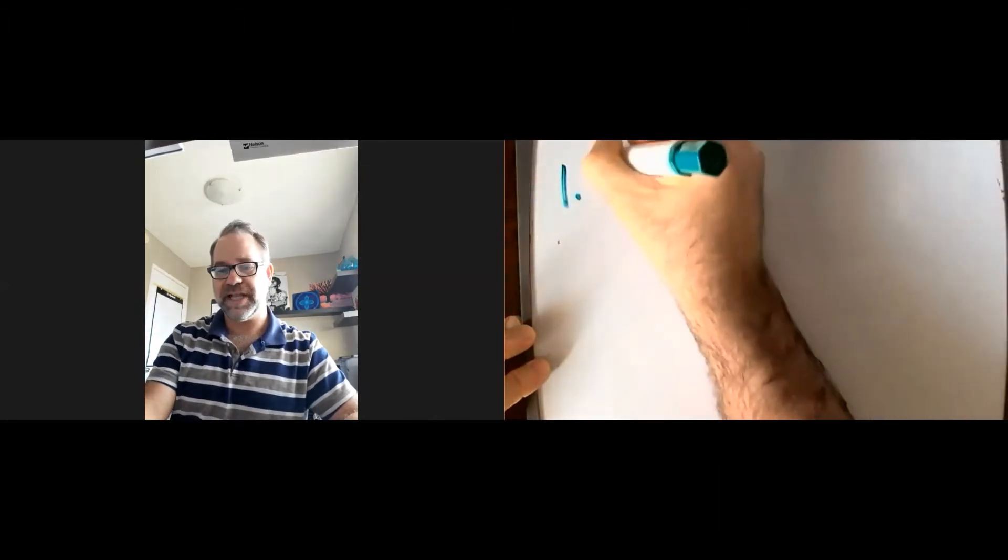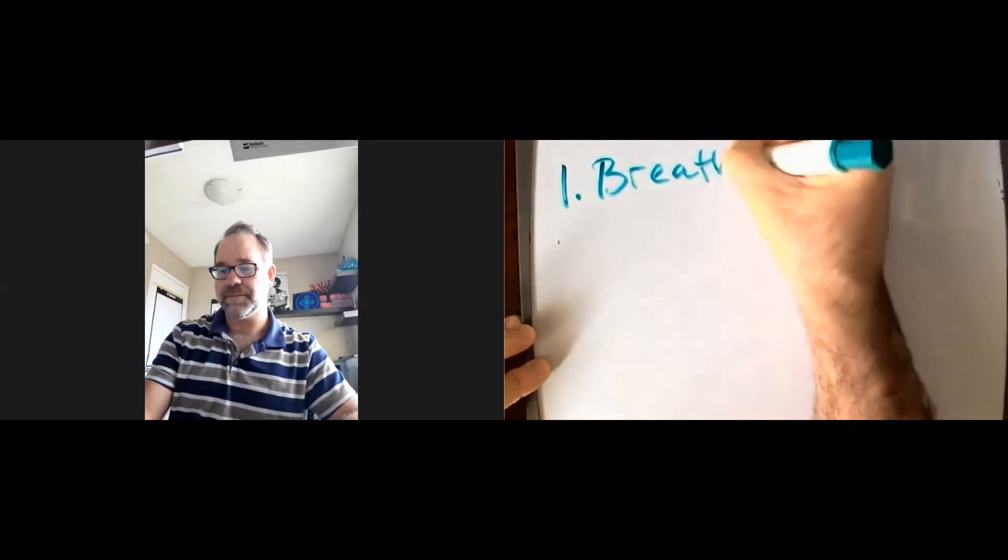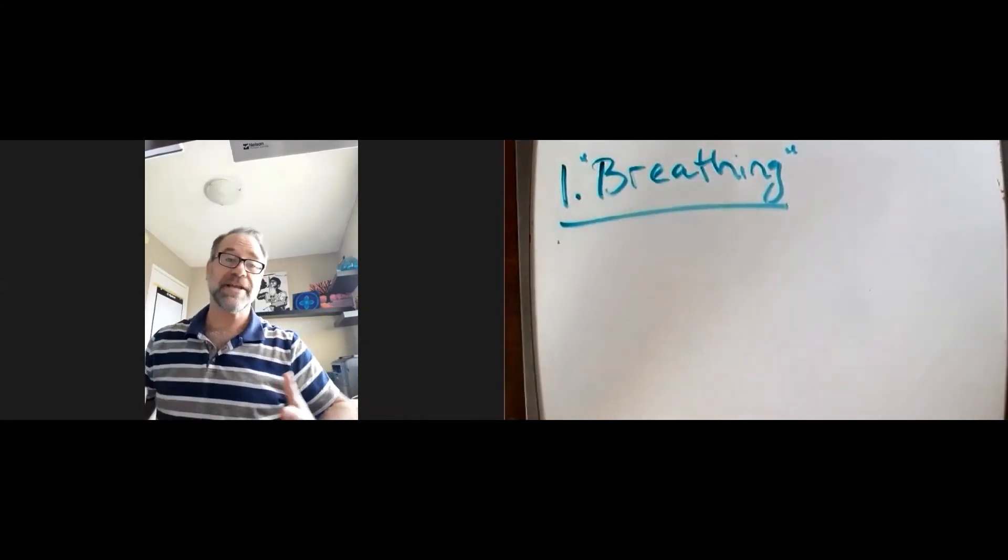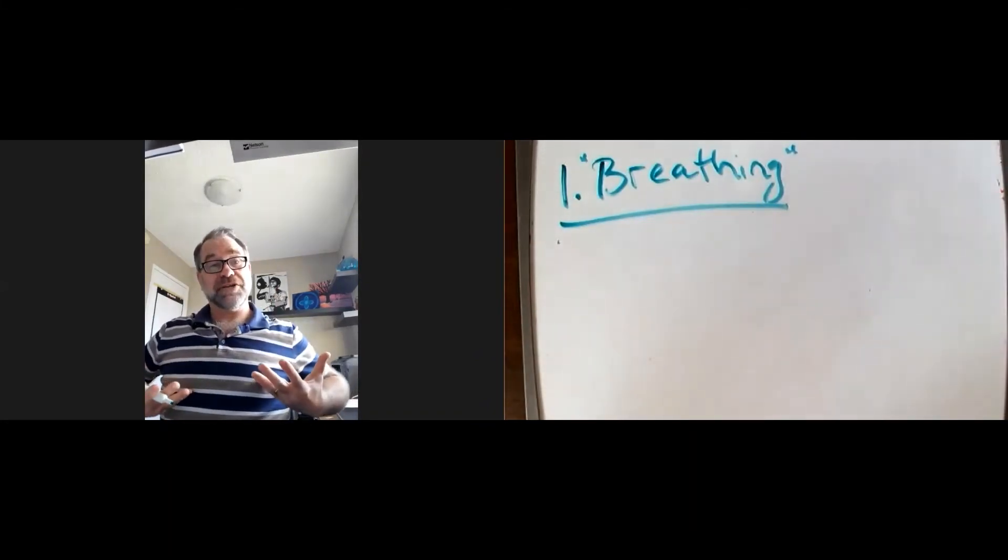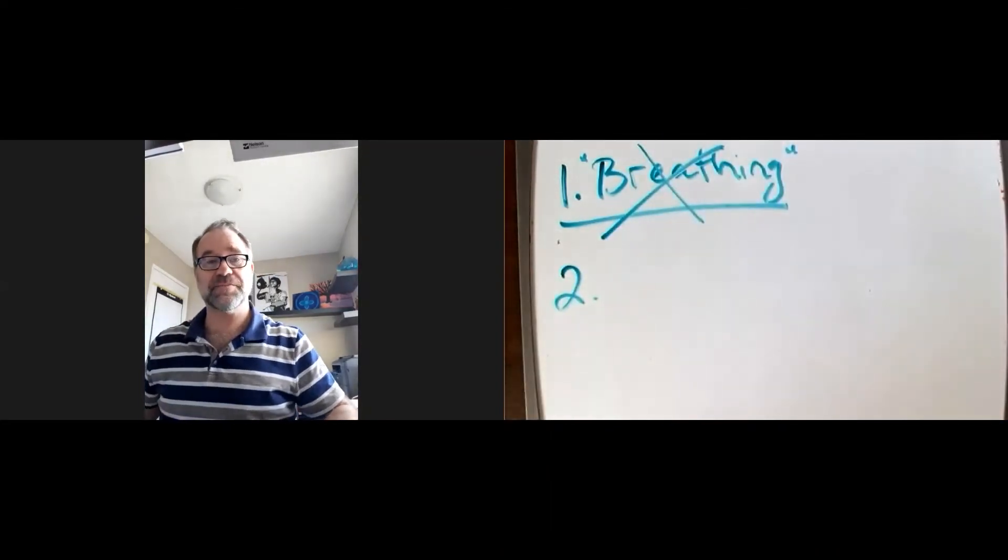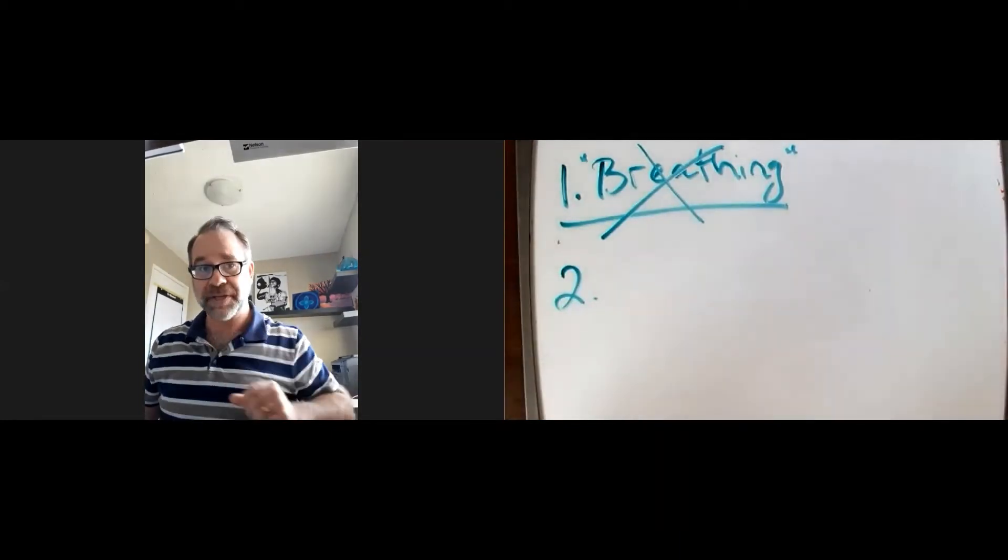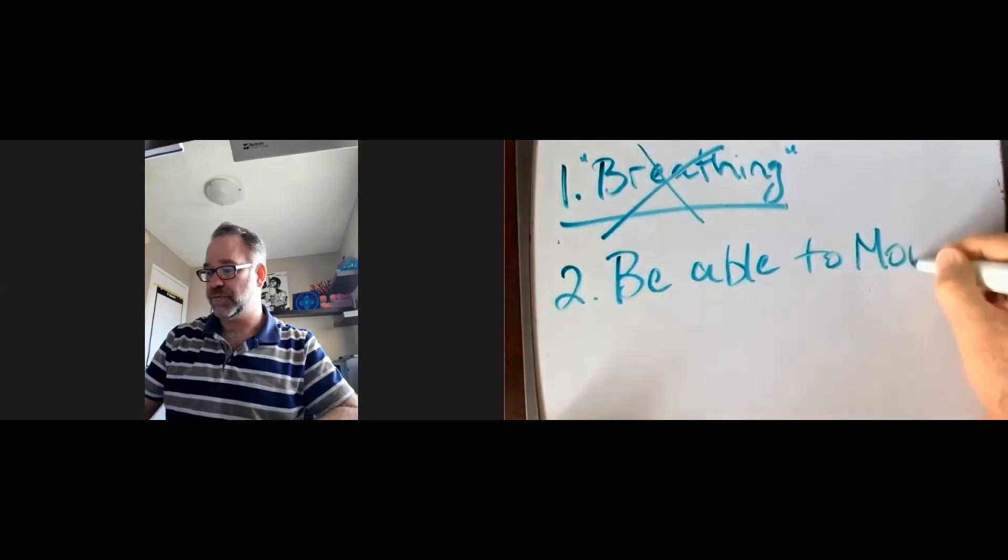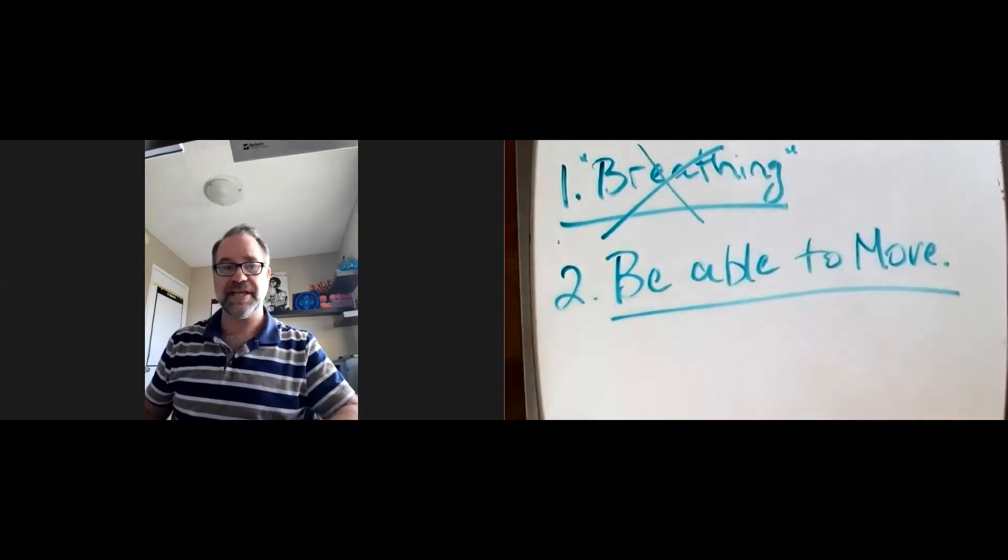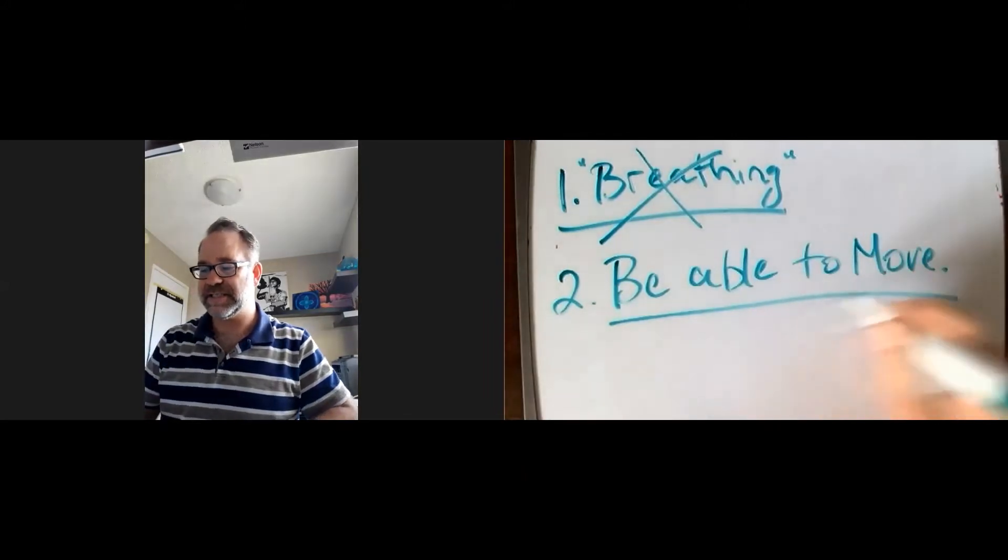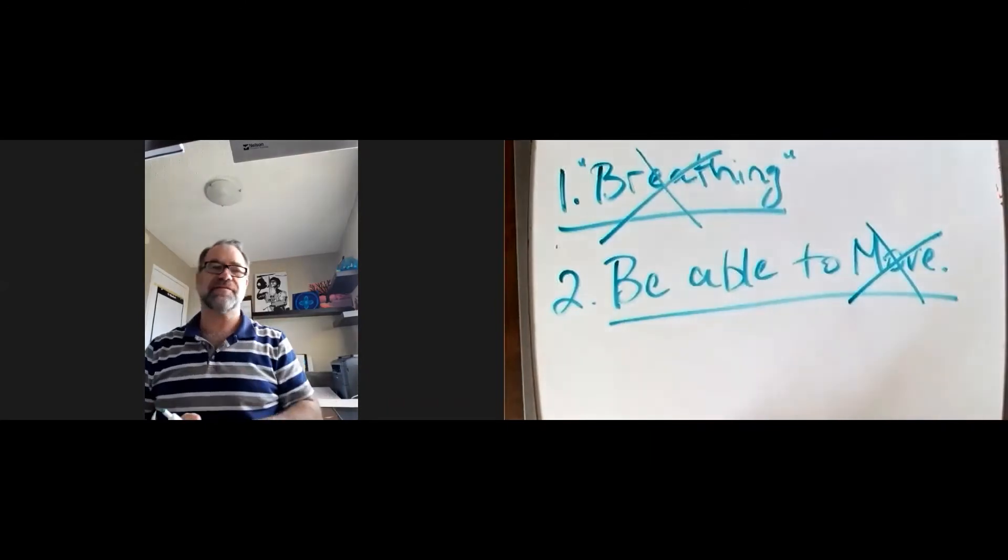Two things that students often get wrong. Number one, they say in order to be alive something must be breathing. But that's not true because plants don't breathe. Plants respire and exchange gases but they don't have lungs the way we do. The second thing people often get wrong is they think that in order to be alive things must be able to move. In the case of plants, the plant is structured in position and it doesn't go anywhere. A plant does not move. It might sway in the wind or leaves might fall because of gravity, but it doesn't move.